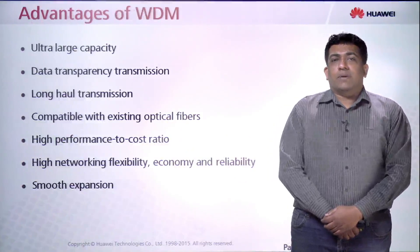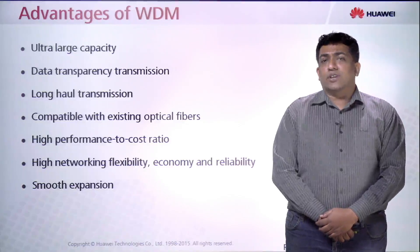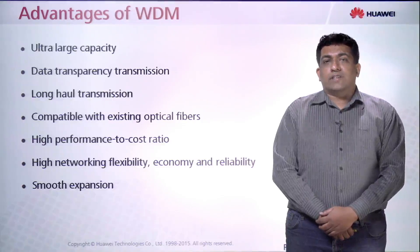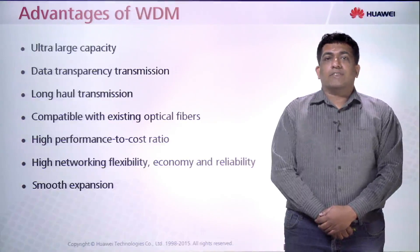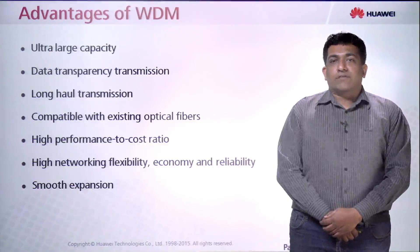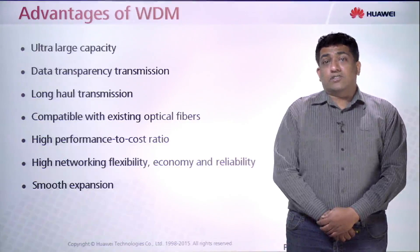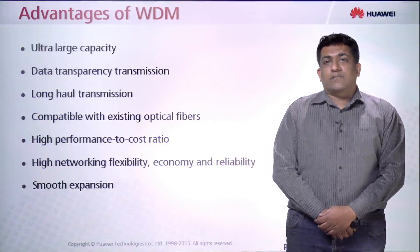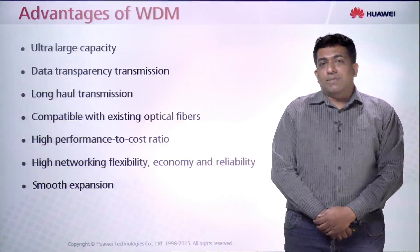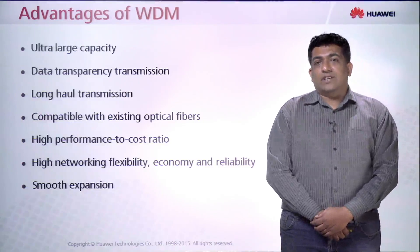The advantages of WDM include ultra large capacity and data transparency in transmission, meaning the data is transferred without modification. It is designed for very long-haul transmission over long distances and is compatible with existing optical fibre — current SDH fibre can be used in the NGWDM environment. It offers a very high performance-to-cost ratio: 80 lambdas can be transmitted, each at 100 Gbps, within just one fibre. It also provides high networking flexibility, economy, reliability — since signal can be amplified or regenerated at any point — and smooth expansion by replacing SDH equipment with WDM equipment.